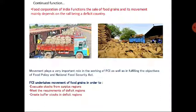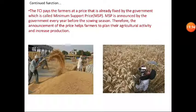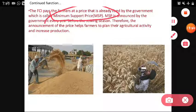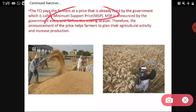An important function of FCI is providing the Minimum Support Price (MSP). MSP is the minimum price already fixed by the government for farmers' crops — for example for wheat, rice, and other commodities like tomatoes. It announces various MSPs before each sowing season. FCI purchases from farmers at MSP and supplies to the public through the Public Distribution System.